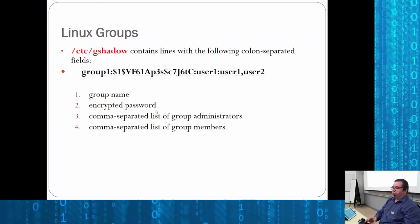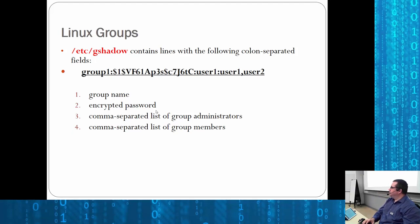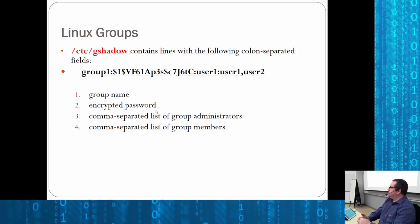There's also a gshadow file which contains colon-separated fields: group name, encrypted password, group administrators, and group members. That's for when you want to set a password on a group — it's a feature that's rarely seen implemented. It creates an almost two-phase authentication: if you CD into a directory belonging to a special group, you get prompted for a second password.